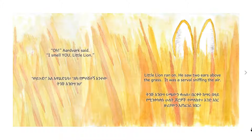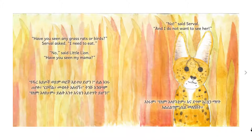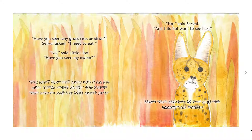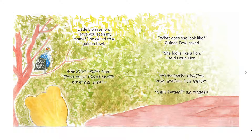He saw two ears above the grass. It was a serval sniffing the air. Have you seen any grass rats or birds? Serval asked. I need to eat. No, said Little Lion. Have you seen my mama? No, said Serval. And I do not want to see her. Little Lion ran on.